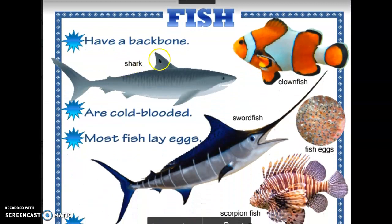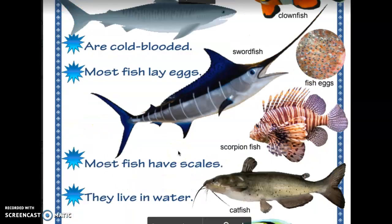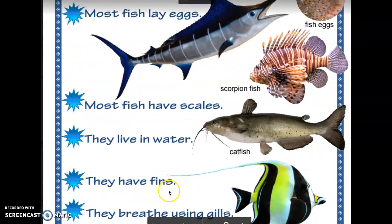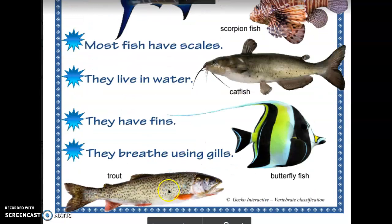Fish have a backbone, are cold-blooded, most fish lay eggs. Most fish have scales, they live in water, they have fins, and they breathe using gills.